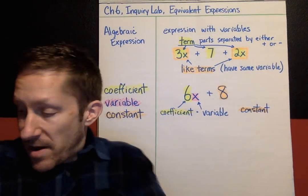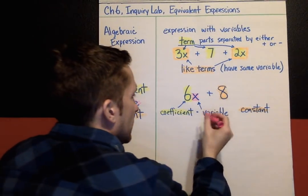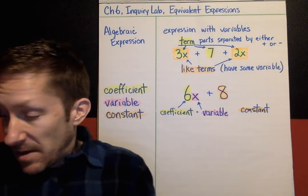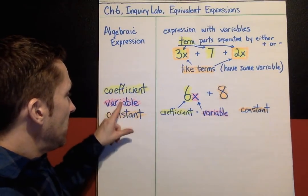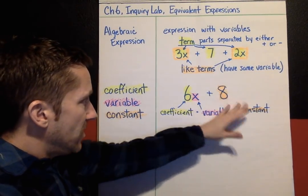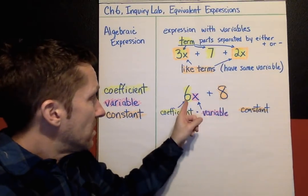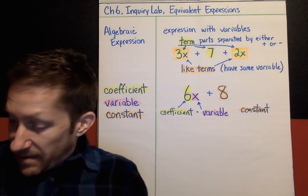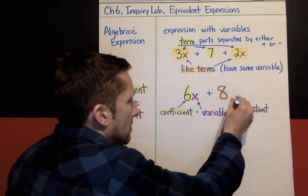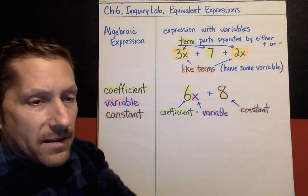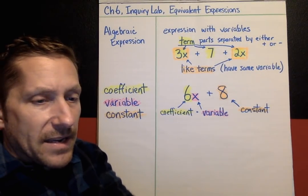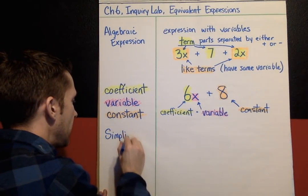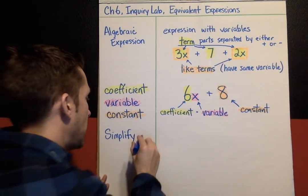So quite a bit of vocabulary in this lab, and it carries into lesson seven as well. To recap: variable is a letter; the number right in front of the variable is called a coefficient; a number all by itself is called a constant. What you're going to be doing in this lab is simplifying expressions — simplify the expression.